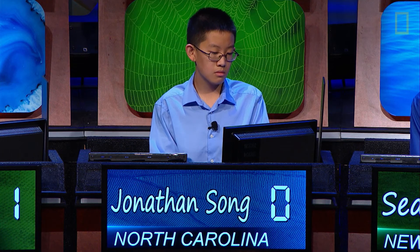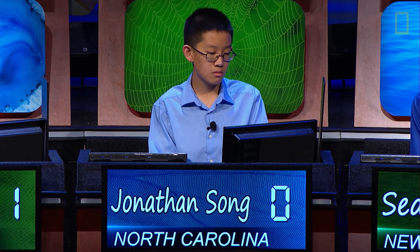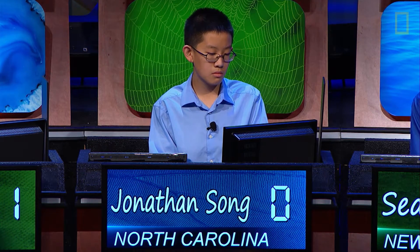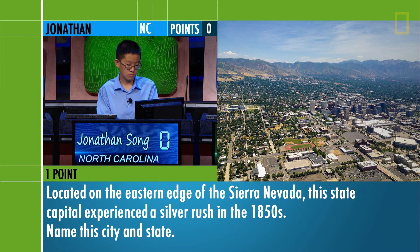Jonathan. Located on the eastern edge of the Sierra Nevada, Nevada, this state capital experienced a silver rush in the 1850s. Name this city and state. Carson City, Nevada. That is right.